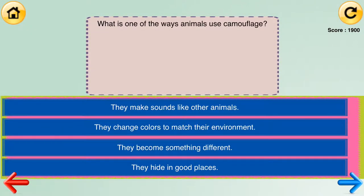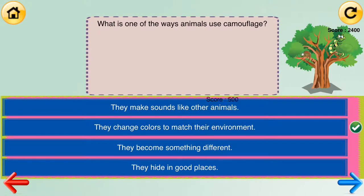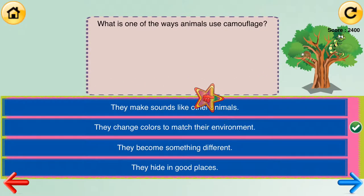What is one of the ways animals use camouflage? [Answer choices: they make sounds like other animals; they change colors to match their environment; they become something different; they hide in good places.] Marvelous. They change colors to match their environment.